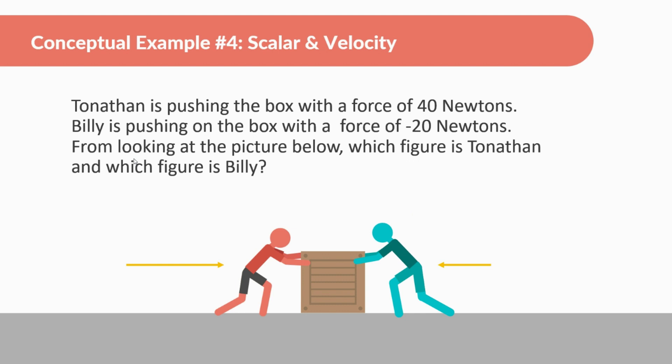Okay. Tonathan is pushing the box with a force of 40 newtons. Billy is pushing on the box with a force of negative 20 newtons. From looking at the picture below, which figure is Tonathan and which figure is Billy? Okay. So I know we have arrows here, but I'm going to kind of draw a little bit different. I'm going to draw this person here. This person in blue, I believe, is pushing to the left. Okay. And this person in red over here is pushing to the right. The person that's pushing to the left is going to be pushing with a negative force. So this is negative 20 newtons. And the person pushing to the right is going to be pushing with a positive force, which is going to be 40 newtons. So whoever is pushing to the right is going to be the positive. So Tonathan is pushing the box with a force of positive 40 newtons. So this is going to be Tonathan and Billy's pushing the box with a force of negative 20 newtons. So this is Billy. So this is what it should look like.